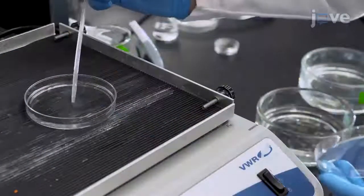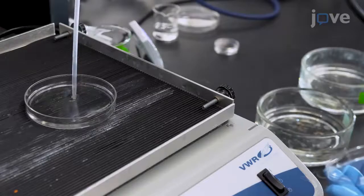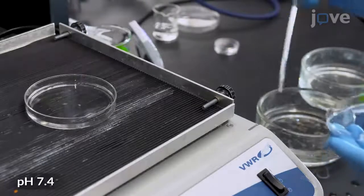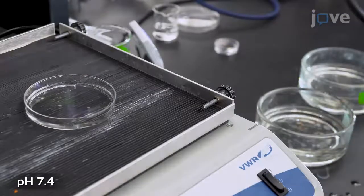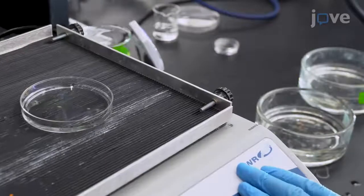After fertilization, to de-jelly the egg packages, place them in seawater containing 3% cysteine on a glass petri dish and gently agitate on a shaker for 12 minutes.